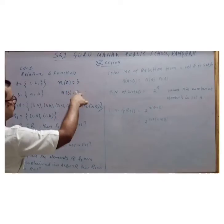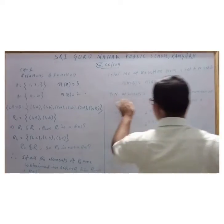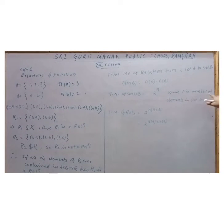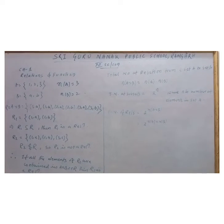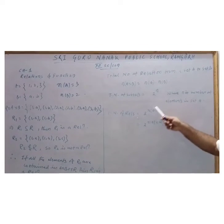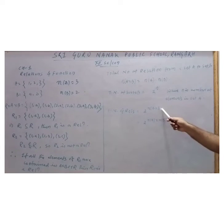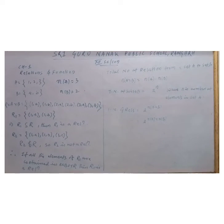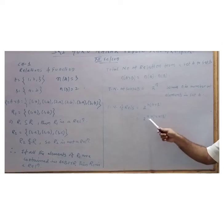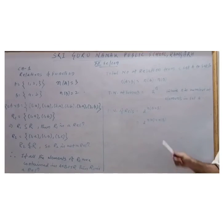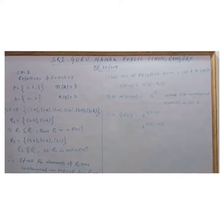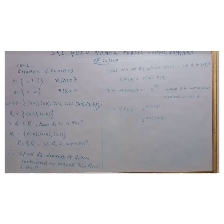Now total number of subsets - it is the formula we learned in class 11: 2^n when n is the number of elements in set A. Now this total number of relations, we derive this formula from the subsets: 2^n(A×B), because the definition is all about subset. So we can write 2^(n(A) × n(B)). So the total number of relations is 2^n(A×B) or 2^(n(A) × n(B)).